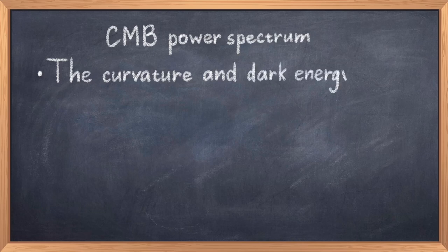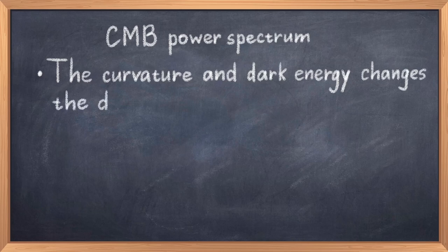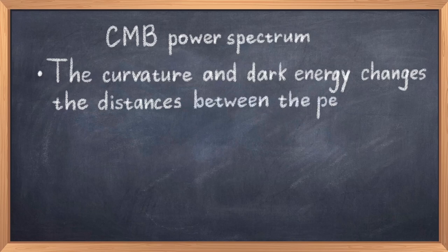The curvature of space affects the position of the peaks, more precisely the distance between the peaks. In a closed universe, the peaks would be closer together, and in an open, they would be further apart. The dark energy parameter plays a similar role, but it has a smaller effect.